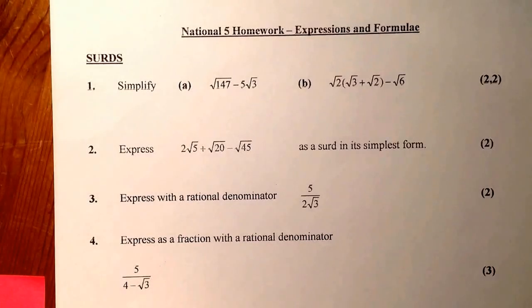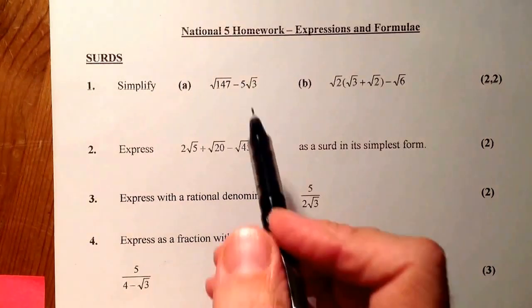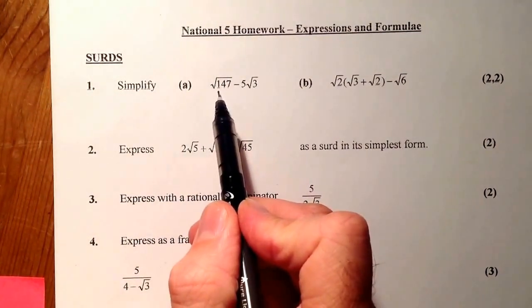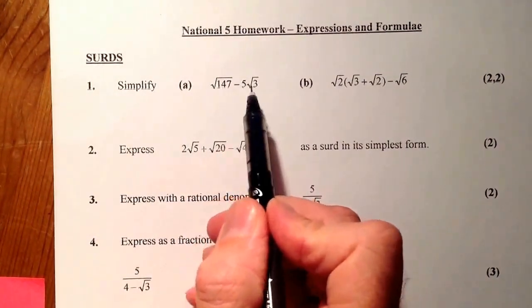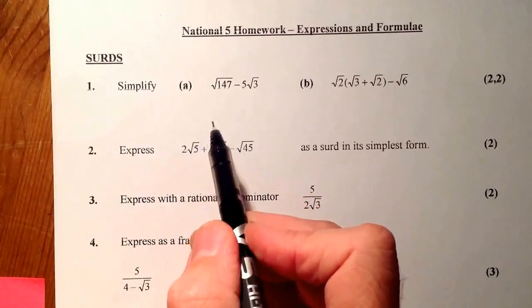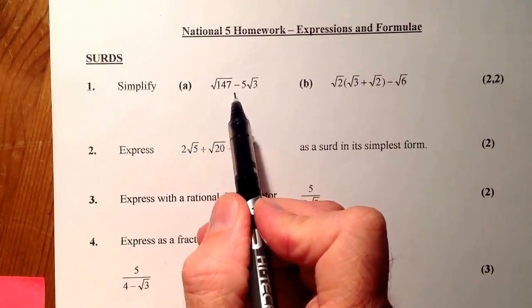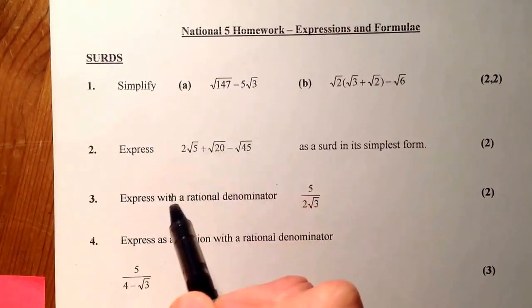This is National 5 homework, expressions and formulae, surds. The first question we have to do is to simplify two surds. I've got root 147 minus 5 root 3.